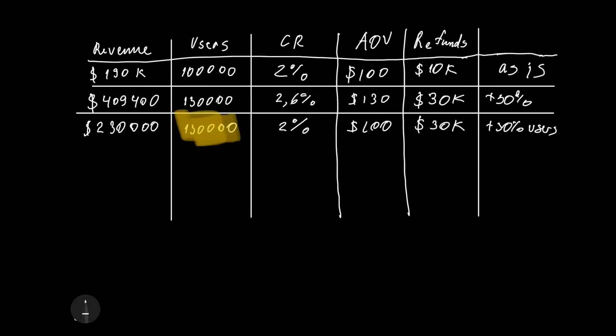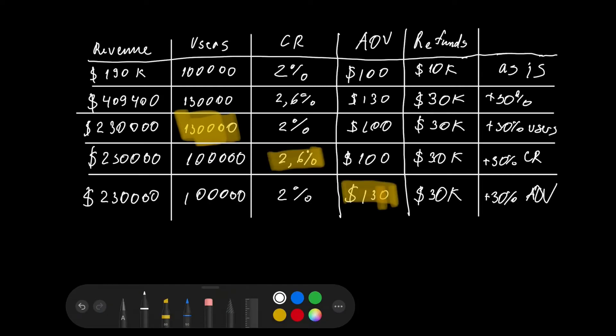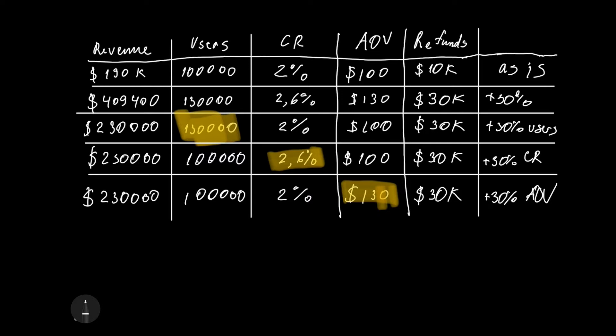I will improve other metrics as well like conversion rate and average order value to show you the result. As you can see on the screen if we improve one metric by 30 percent it will significantly boost our revenue and the ideal situation to double our overall revenue is to increase all our major metrics by 13 percent.